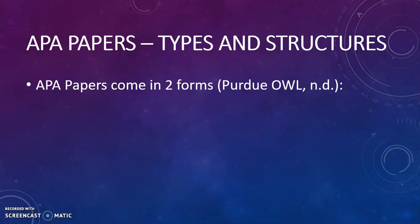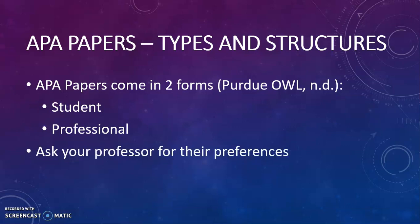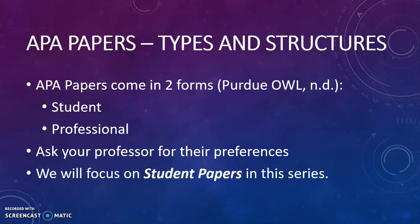All right, so the two forms for APA papers are the student form, which is typically used in classes, and the professional form, which is usually used for journal article publications by professional researchers. I would always recommend that you check in with your professor to see what they want you to do, because in more advanced classes your professor might want you to start moving toward that professional style of writing. But for these videos, we'll focus on student papers, because that's most likely what you'll be encountering in your classes.